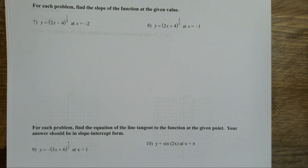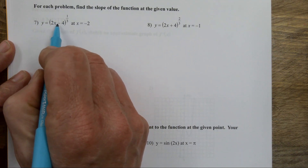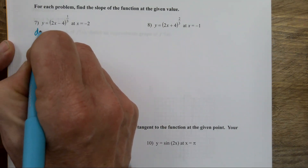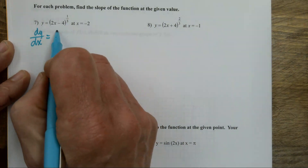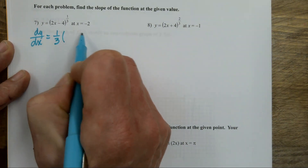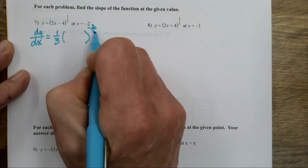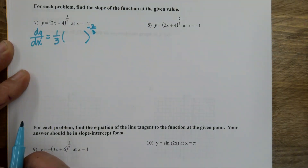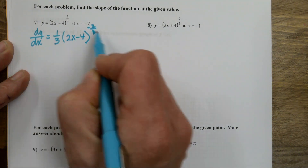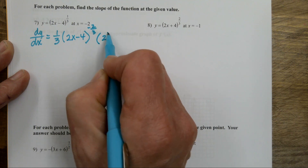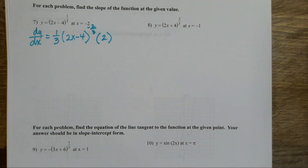When I go through and do my chain rule on this one — because it's got a function inside a function — I get dy/dx: bring the power down, lower it by one. One third minus one is negative two thirds. Leave the inner alone, but multiply by the derivative of the inner.